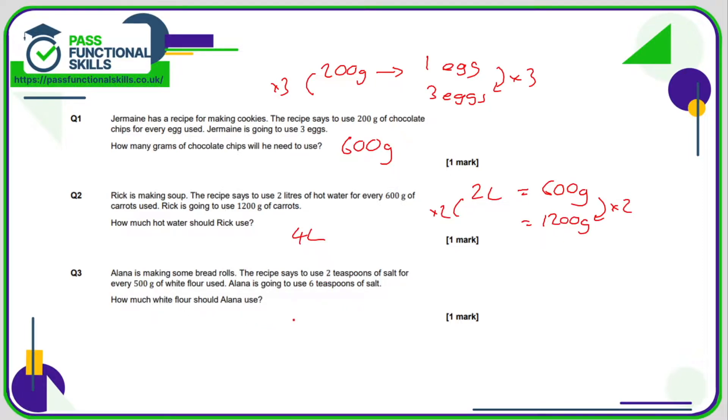Number three: we know we need two teaspoons of salt for 500 of flour. So if Alana is using six teaspoons, that is triple the amount of salt, so therefore we need to triple the amount of flour, and 500 times three is 1500 grams.